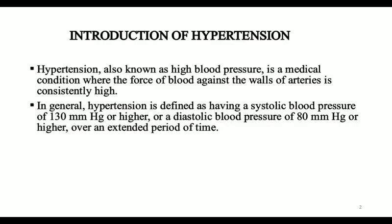First, we have to see the introduction of hypertension. What is hypertension? Hypertension is also known as high blood pressure. It is a medical condition where the force of blood against the wall of an artery is consistently high. In general, the hypertension range is 120 over 80 — 120 is the systolic blood pressure and 80 is the diastolic blood pressure.